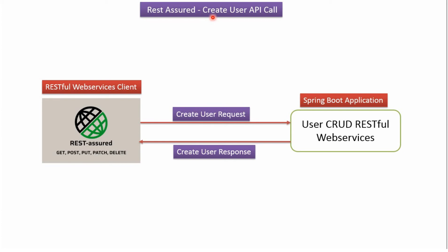In this video tutorial I will explain how to create a user API call using REST Assured. Here you can see a Spring Boot application which exposes RESTful Web Services for user create, user get, user update, and user delete. Here you can see a RESTful Web Services client developed using REST Assured. Using this we can send a create user request to the Spring Boot application, which processes the request and sends a create user response back to the RESTful Web Services client.